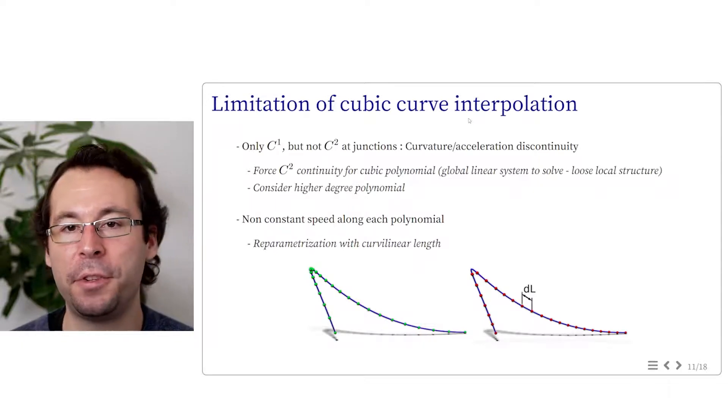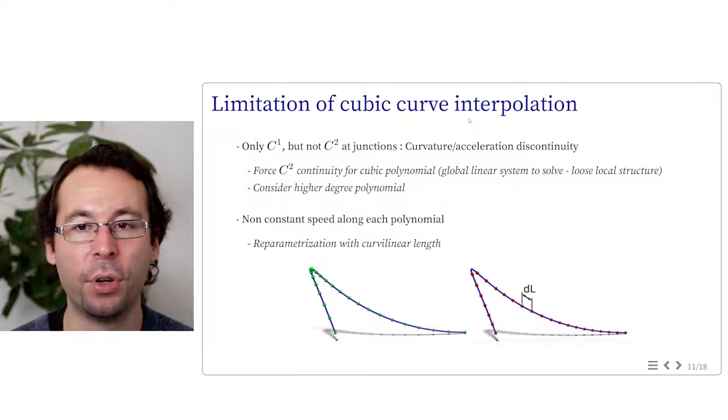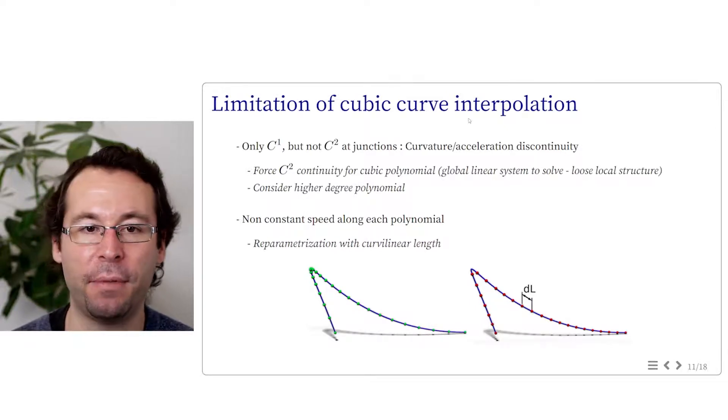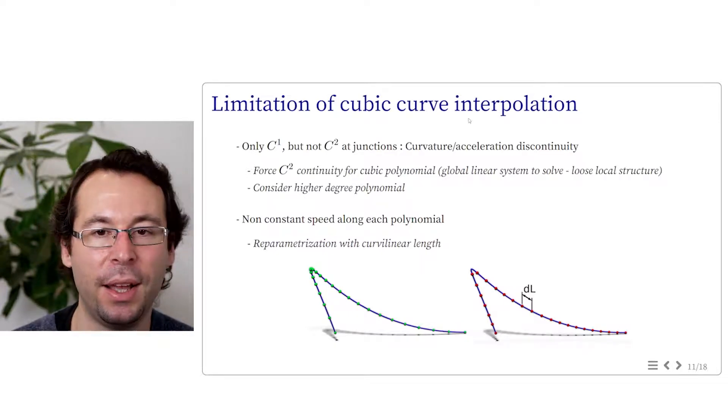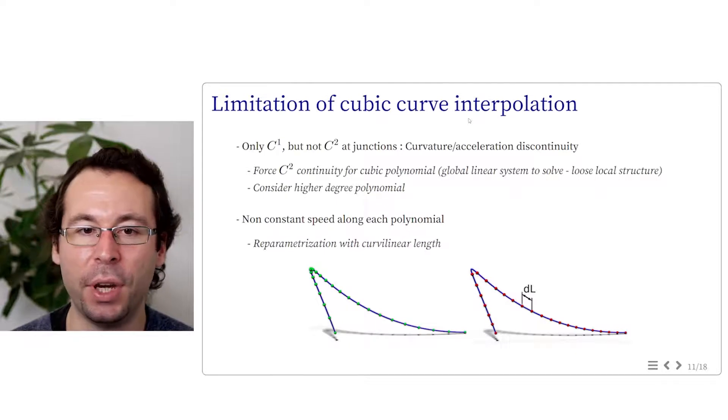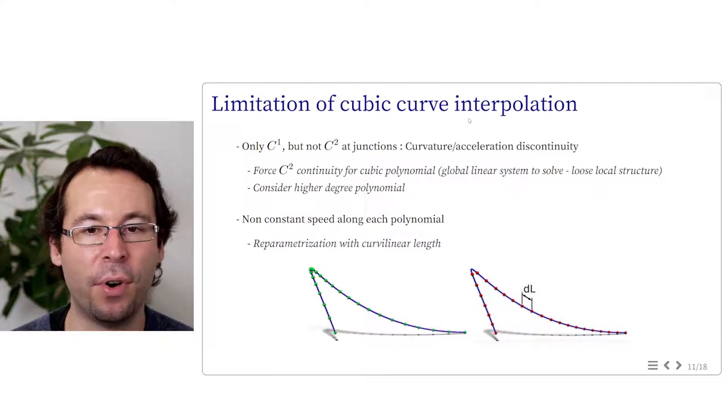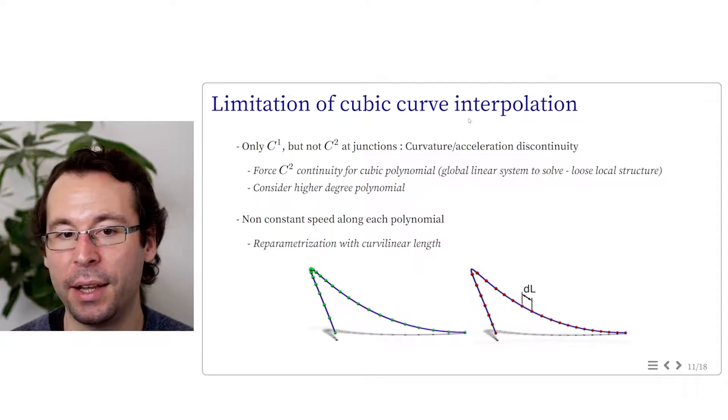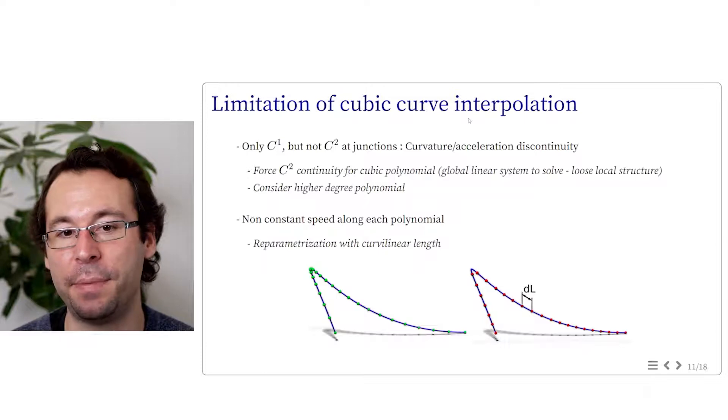We can note that the speed along each polynomial is not constant. So we can have local acceleration and deceleration depending on the values of the derivatives. This may not be wanted by an animator that may want to have a more precise control on the velocity along the interpolation. One possibility is to reparametrize the curve with curvilinear lengths and set the time to evolve linearly along it. However, this process needs to be performed numerically as we cannot express explicitly curvilinear parametrization of 3D spacetime curve.